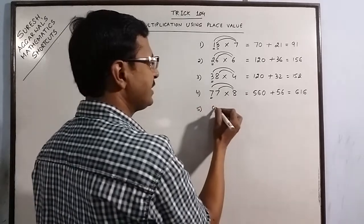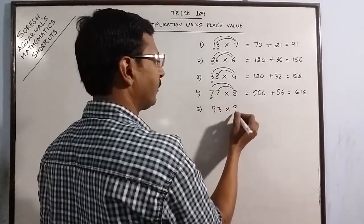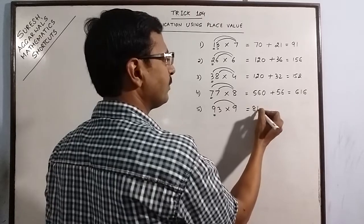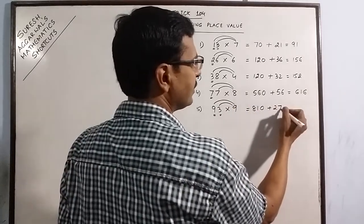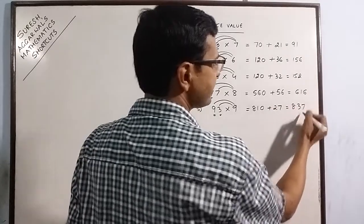Say we have 93 into 9, 9 into 9 is 81, put 1 zero, 3 into 9 is 27. So you have 837 as the product.